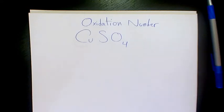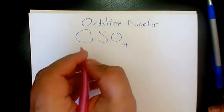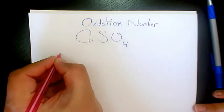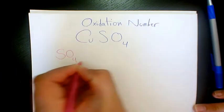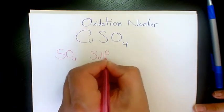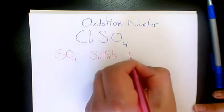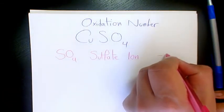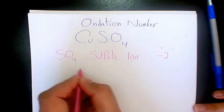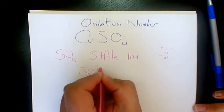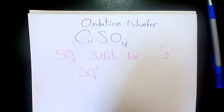What's up guys, this is Massey. Welcome to another video. In this video I want to show you how to find the oxidation number for copper sulfate or CuSO4. So first of all, I'm going to say remember SO4 is sulfate ion, a polyatomic ion, and the charge is negative 2. So we write this SO4 2 minus in here.